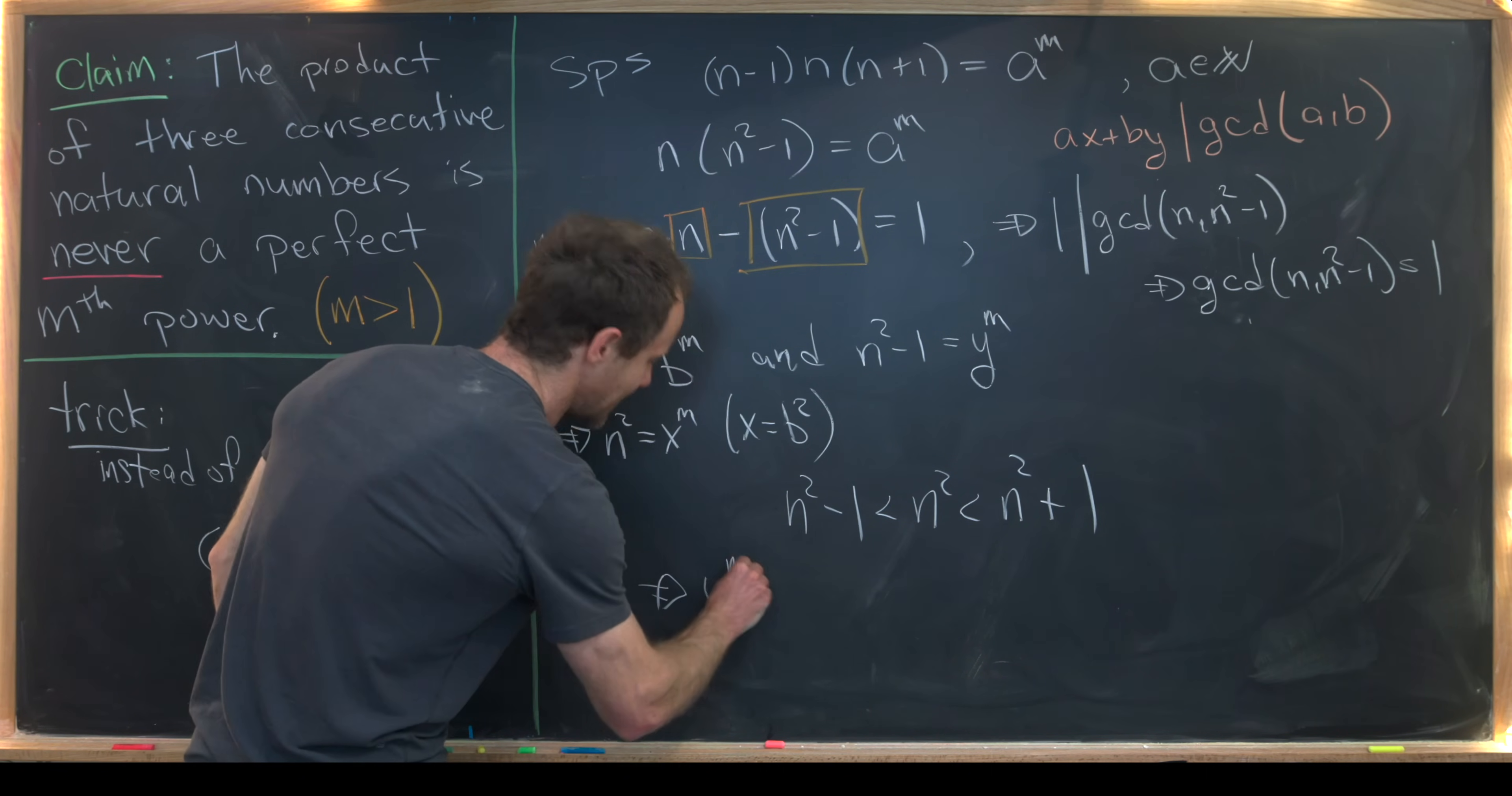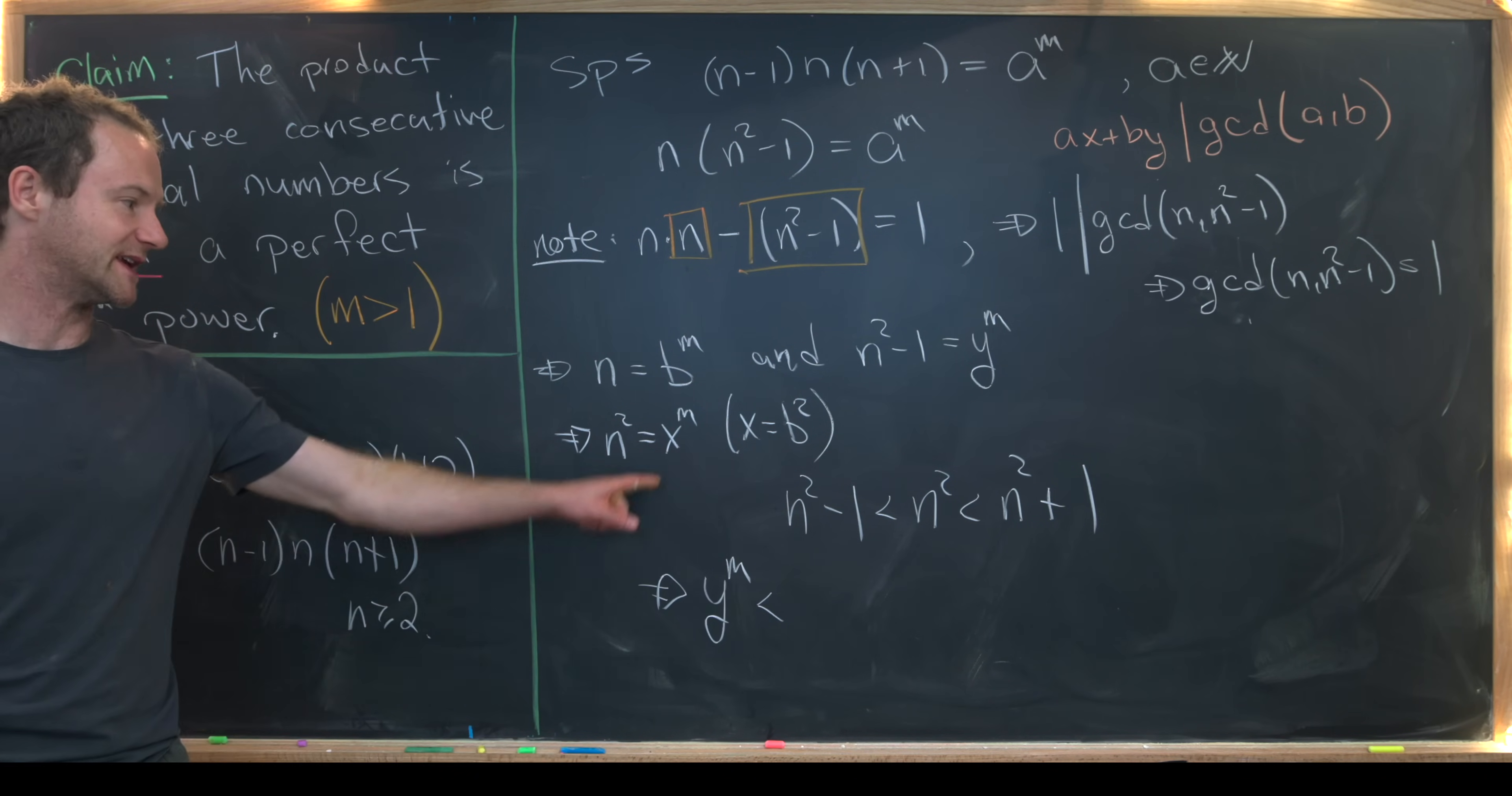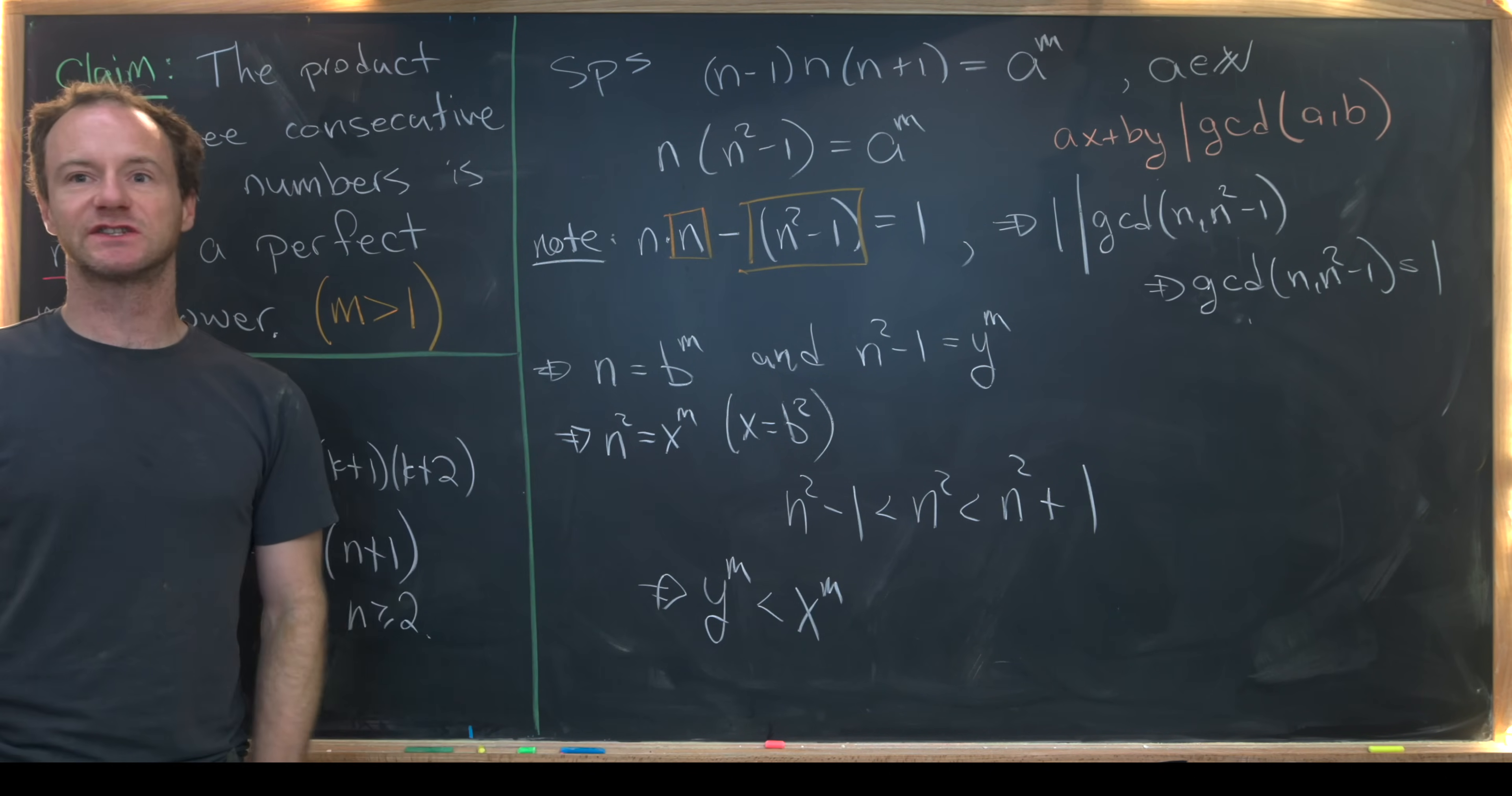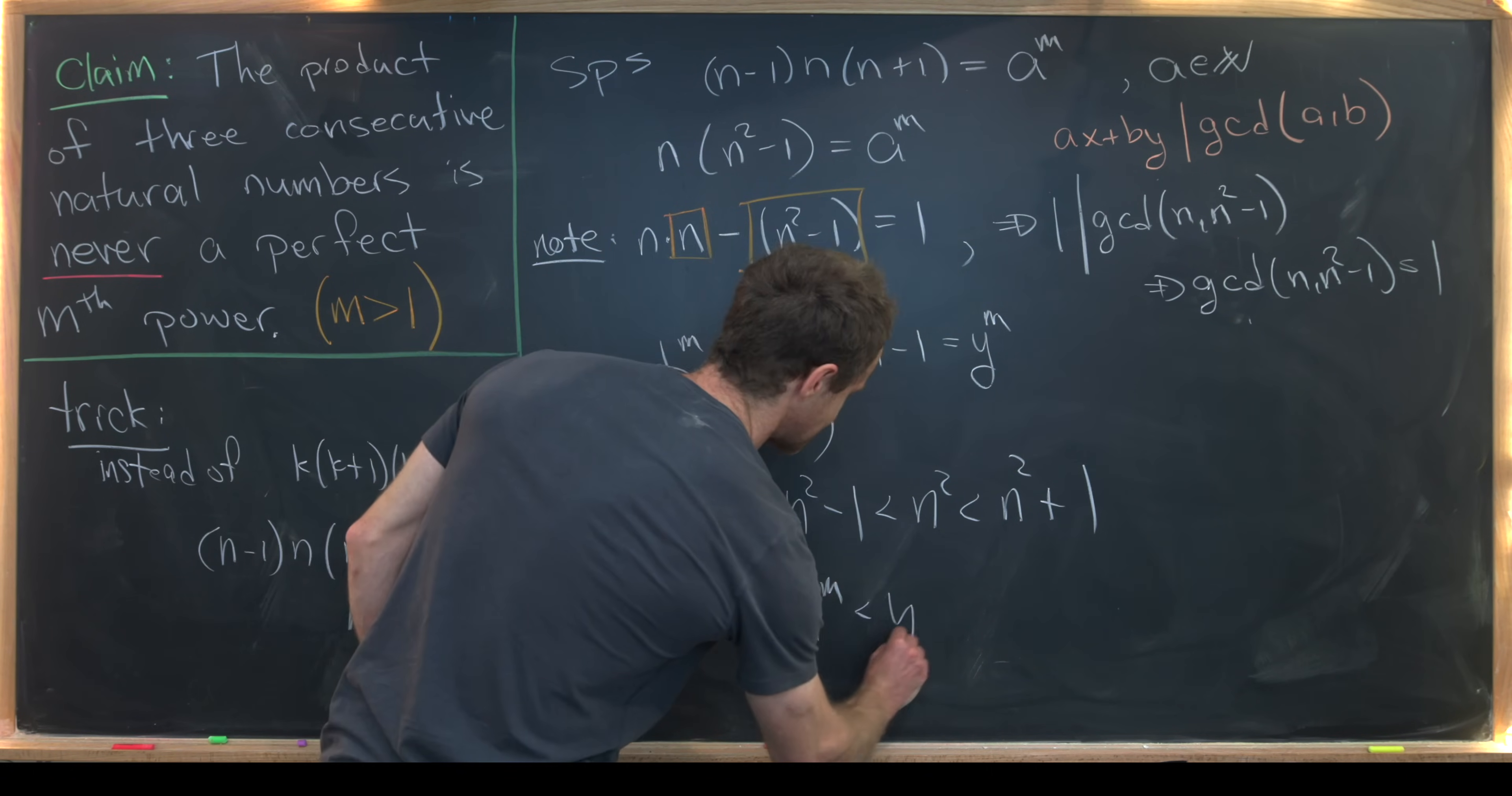So we have y to the m is going to be less than, well this n squared is x to the m, which is less than n squared plus 1. We don't directly have n squared plus 1 here. But moving the 1 over to the other side of the equation here, we have that's less than y to the m plus 1.